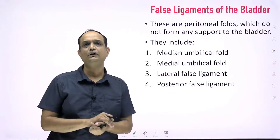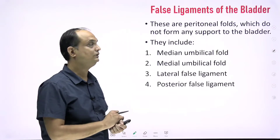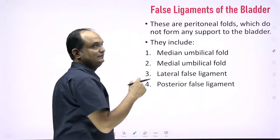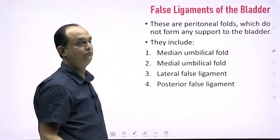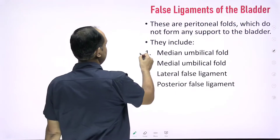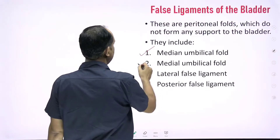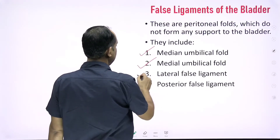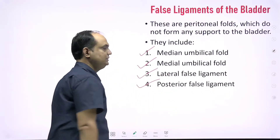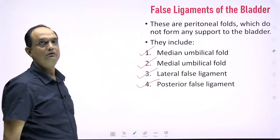The false ligaments are folds of the peritoneum. These include the median umbilical fold, the medial false ligament, the lateral false ligament, and the posterior false ligament. Let us now discuss these ligaments one by one.